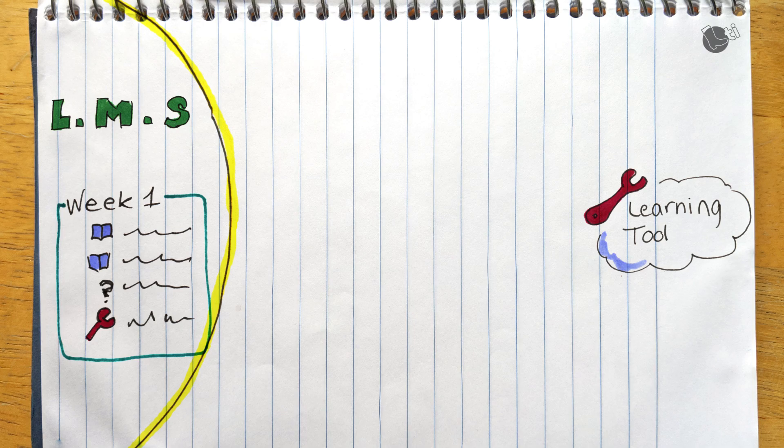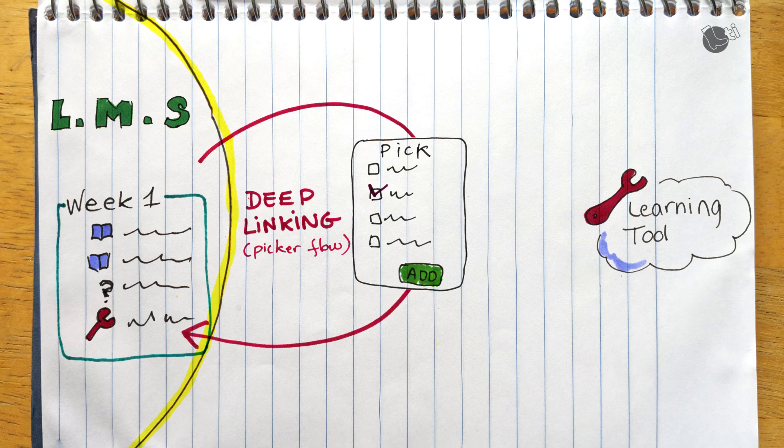That's why there is another UI flow that's part of the LTI Advantage, which is called the LTI deep linking flow. You can see the deep linking flow as a picker flow, but nothing says it has to be a picker experience.